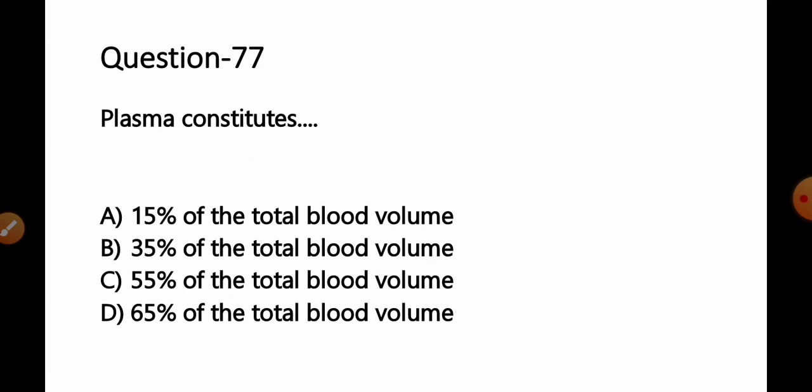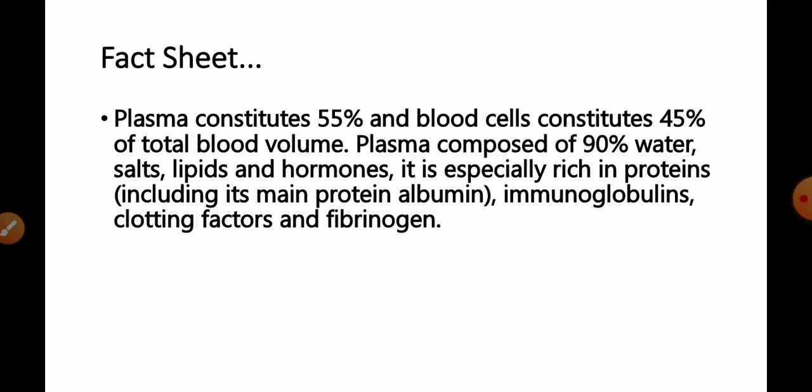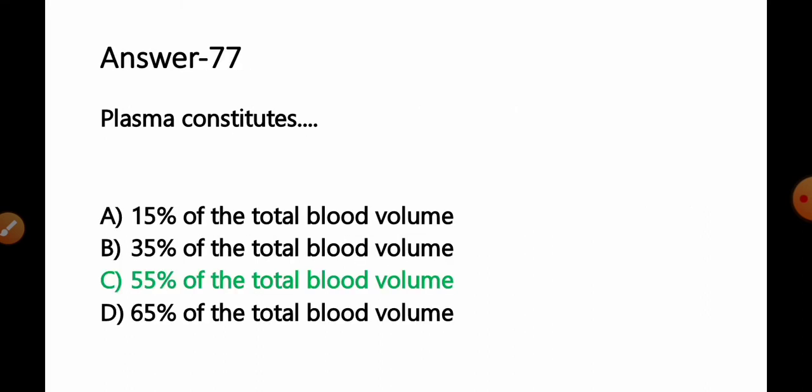Question number 77: Plasma constitutes — Option A: 15%; B: 35%; C: 55%; D: 65% of the total blood volume. Plasma constitutes 55% and blood cells constitute 45% of the total blood volume. Of plasma, 90% is water, salt, lipids, and hormones, and it is especially rich in proteins, immunoglobulins, clotting factors, and fibrinogen. So Option C — 55% — is the correct answer.